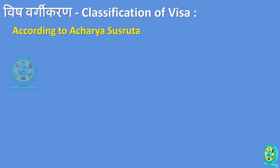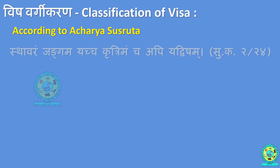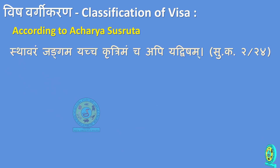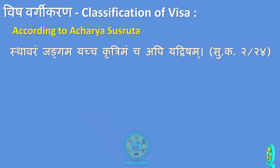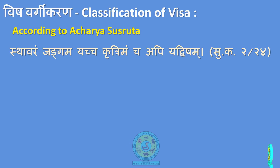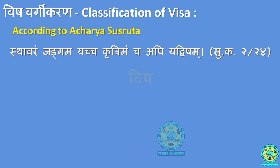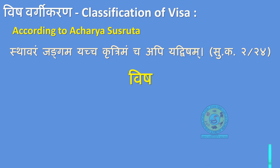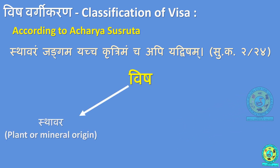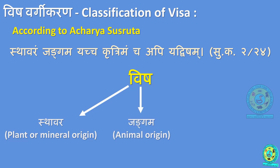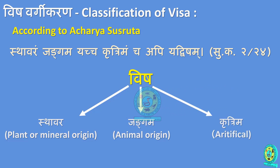According to Acharya Sushruta, reference Sushruta Kalpasthana Chapter 2 Shloka 24: 'Sthavaram Jangamam Yatcha Krittrimam Chaapi Yat Visham.' Sushruta classified Vishah into three categories: Sthavara — Vishah of plant or mineral origin; Jangama — Vishah of animal origin; and Krittrimah — artificially prepared poisons.